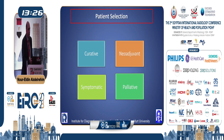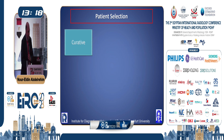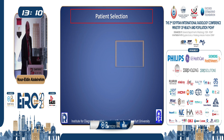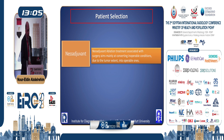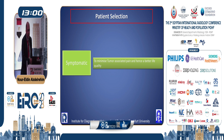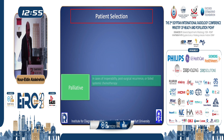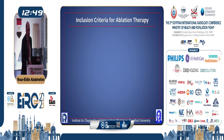Regarding patient selection criteria, we have curative, neoadjuvant, symptomatic, and palliative intentions. Curative intention is to achieve long-term survival associated with effective local tumor control. Neoadjuvant is to convert inoperable cases into operable cases. Symptomatic cases aim to minimize tumor-associated pain and improve quality of life. Palliative treatment is to control symptoms in cases of inoperability, post-surgical recurrence, or failed systemic chemotherapy.